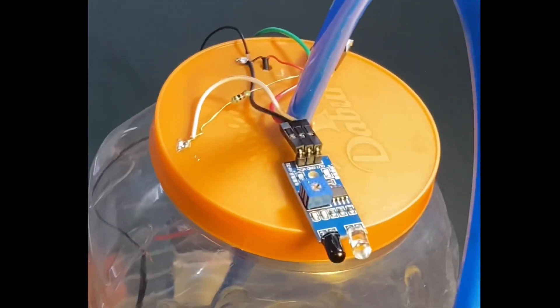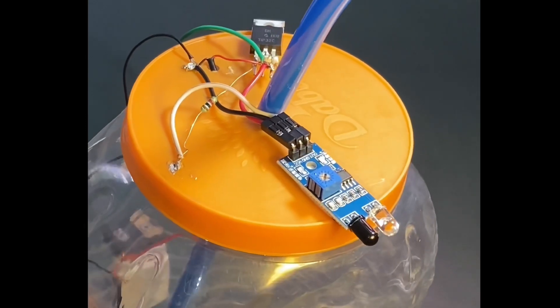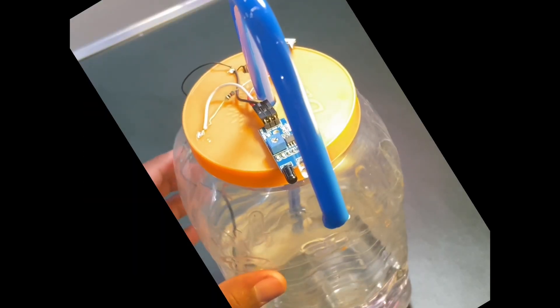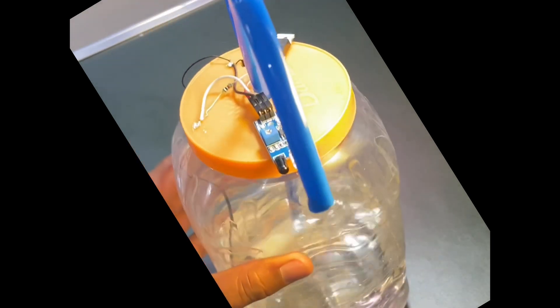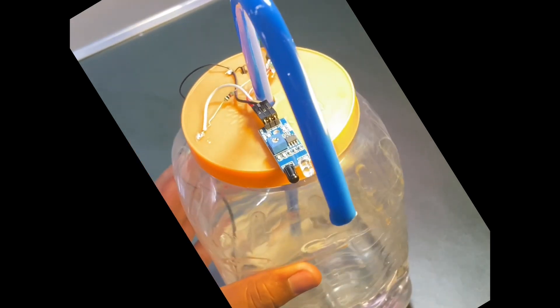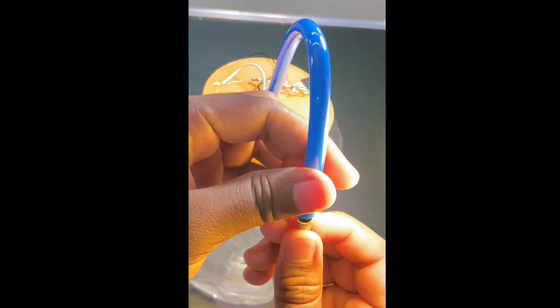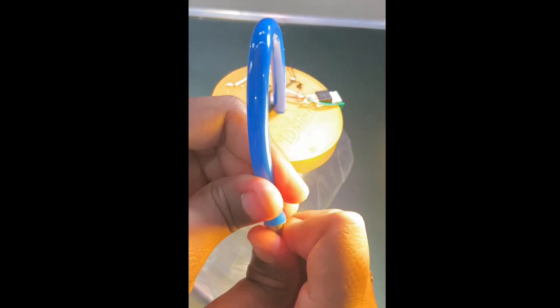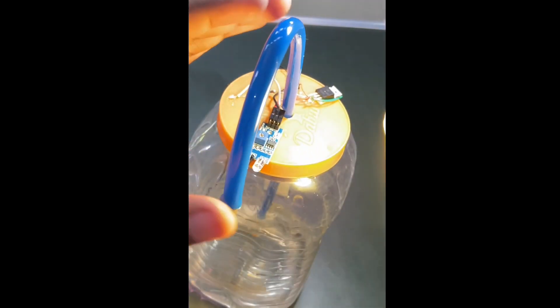And here is the circuit, completely ready. We are just adding a tip of a pen just to limit the flow of liquid. Let's check it out whether it's working or not.